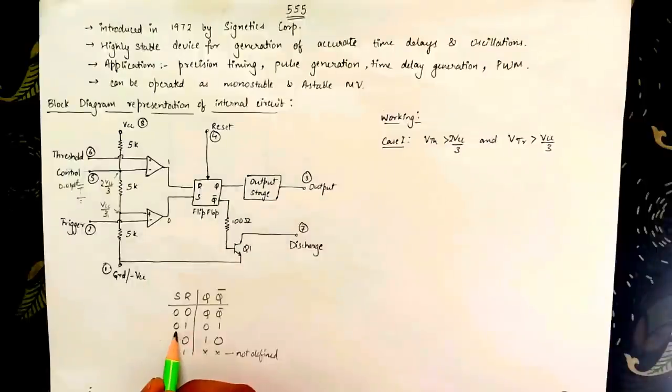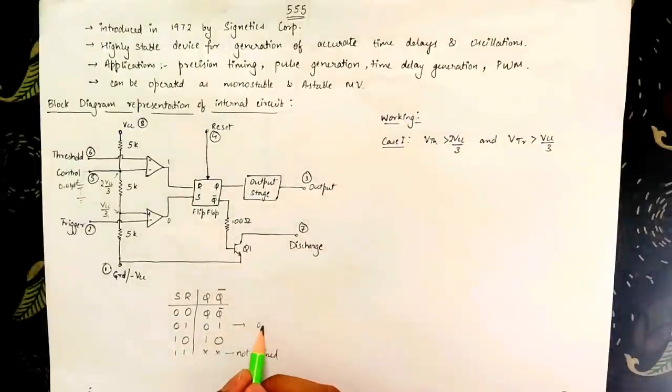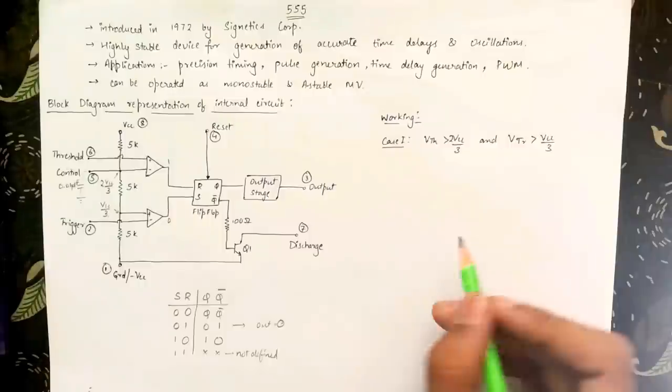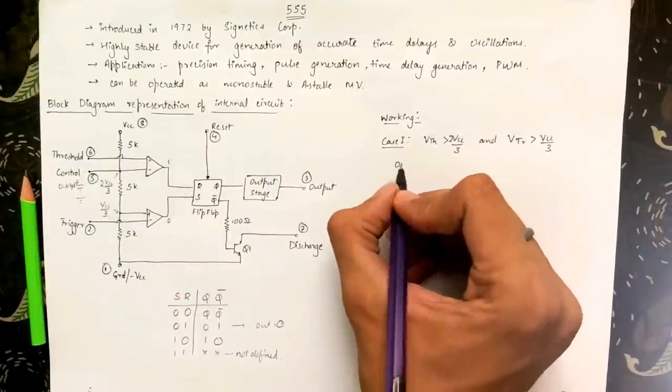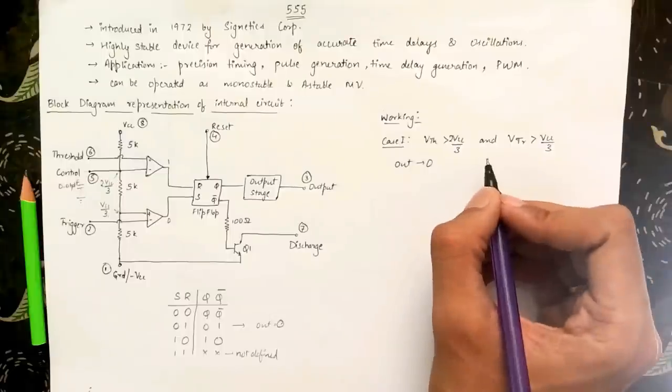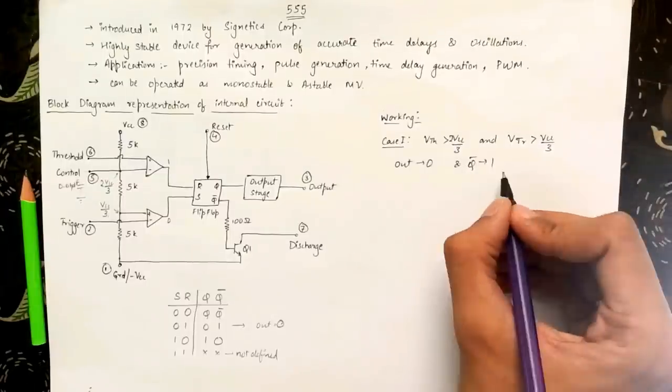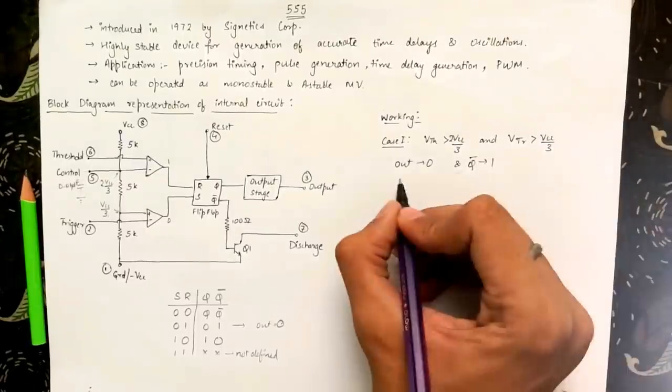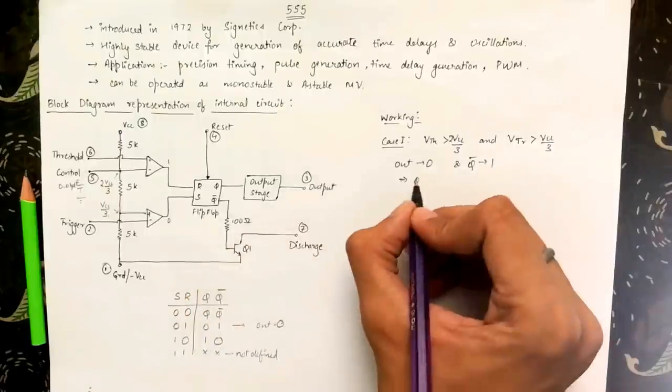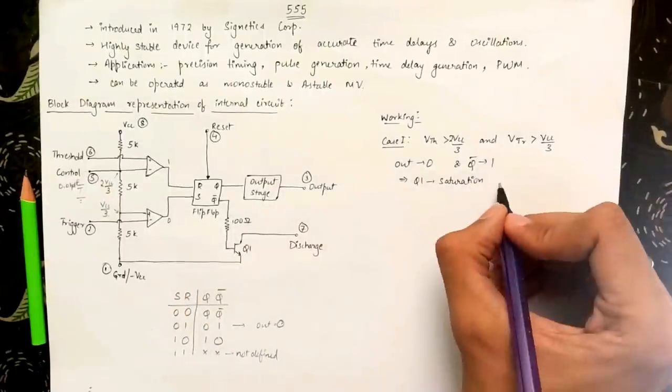Reset is 1 and set is 0. So it is this case where output is 0. So we have output as logic 0 and q bar as 1. When q bar is 1 it sets the Q1 transistor into saturation and thus leads to a short circuit between 7th pin and the ground pin.